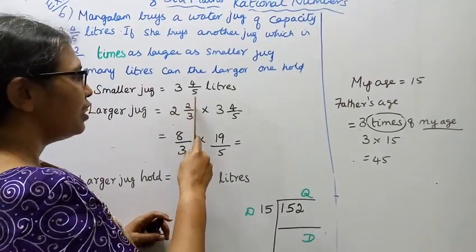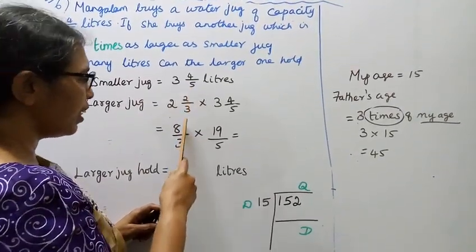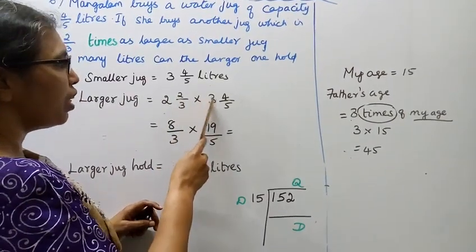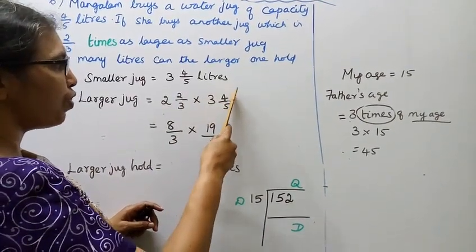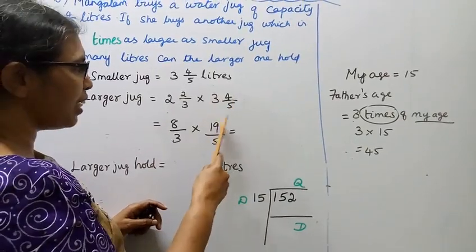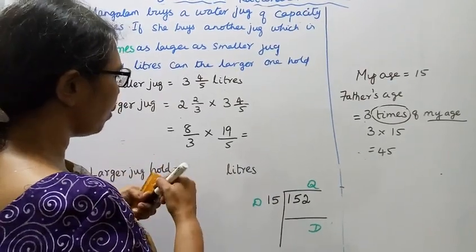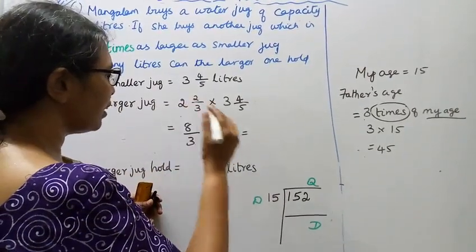Converting to improper fractions: 2 2/3 equals 6 plus 2, which is 8/3. And 3 4/5 equals 15 plus 4, which is 19/5. So we multiply 8/3 times 19/5.